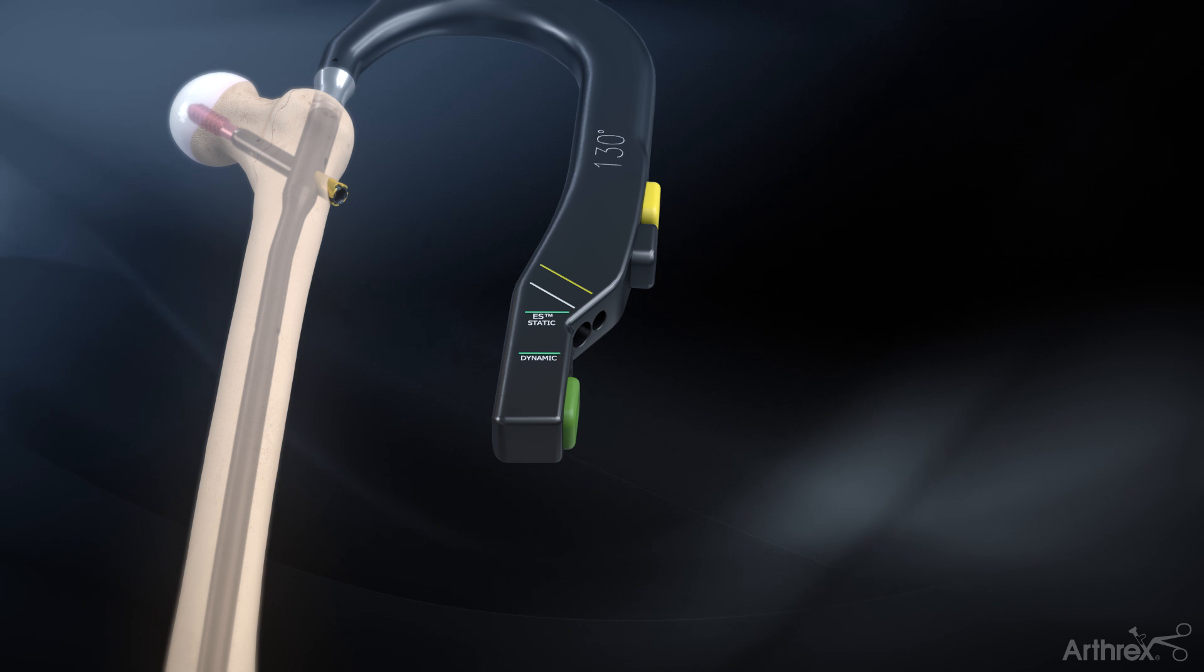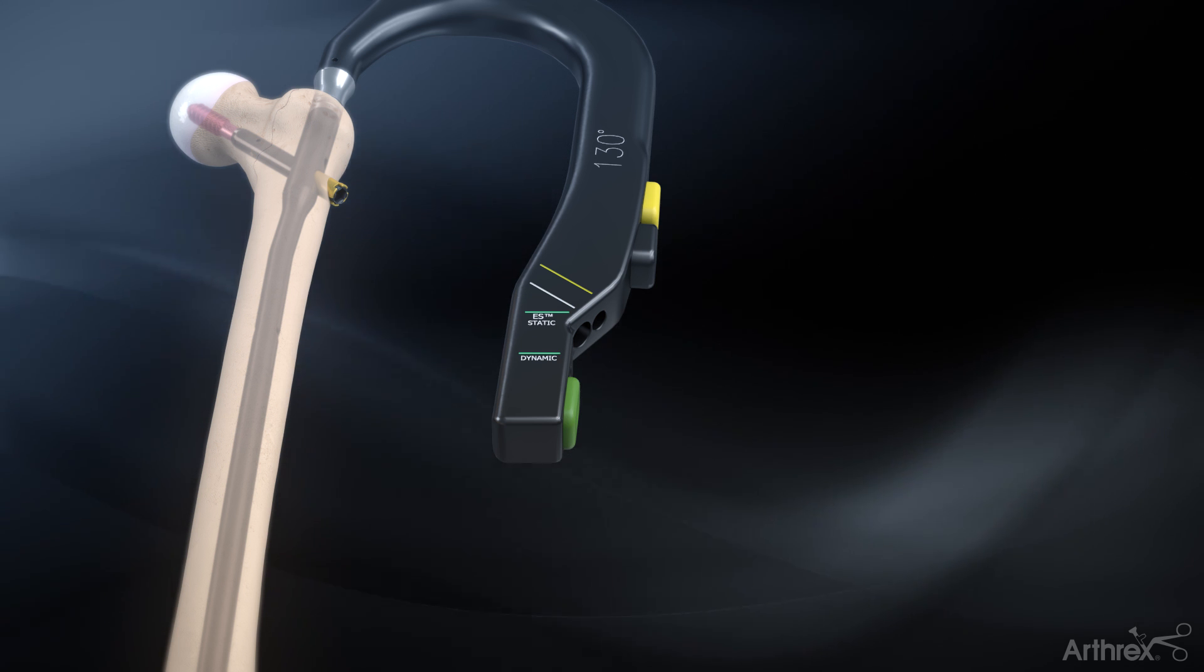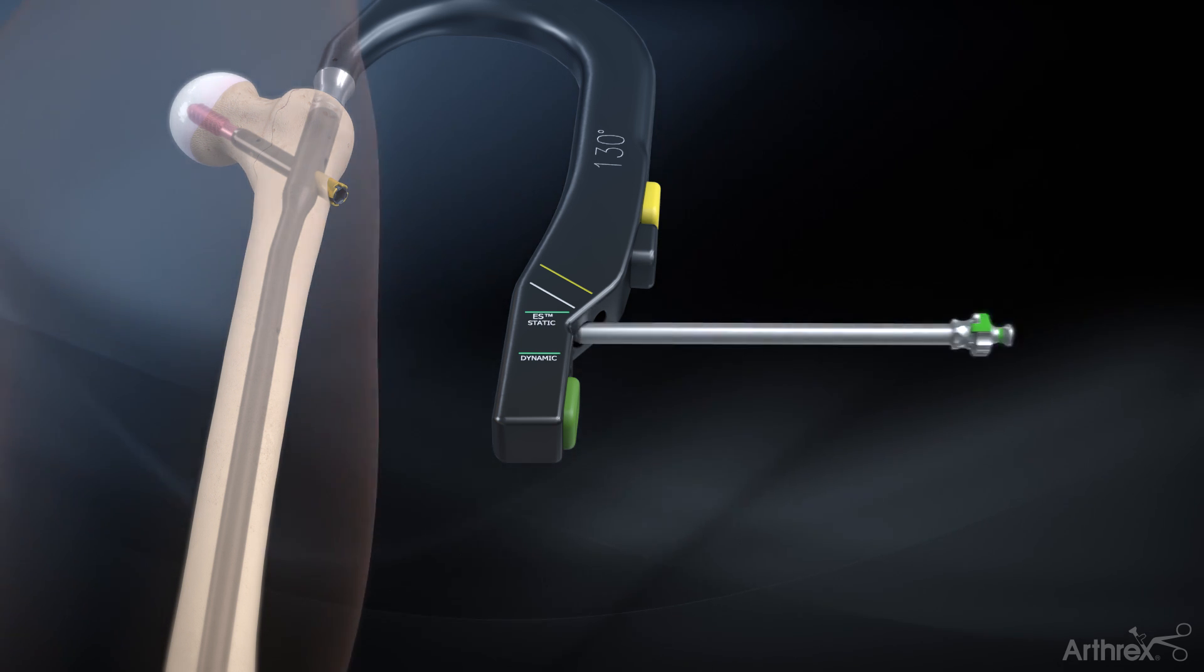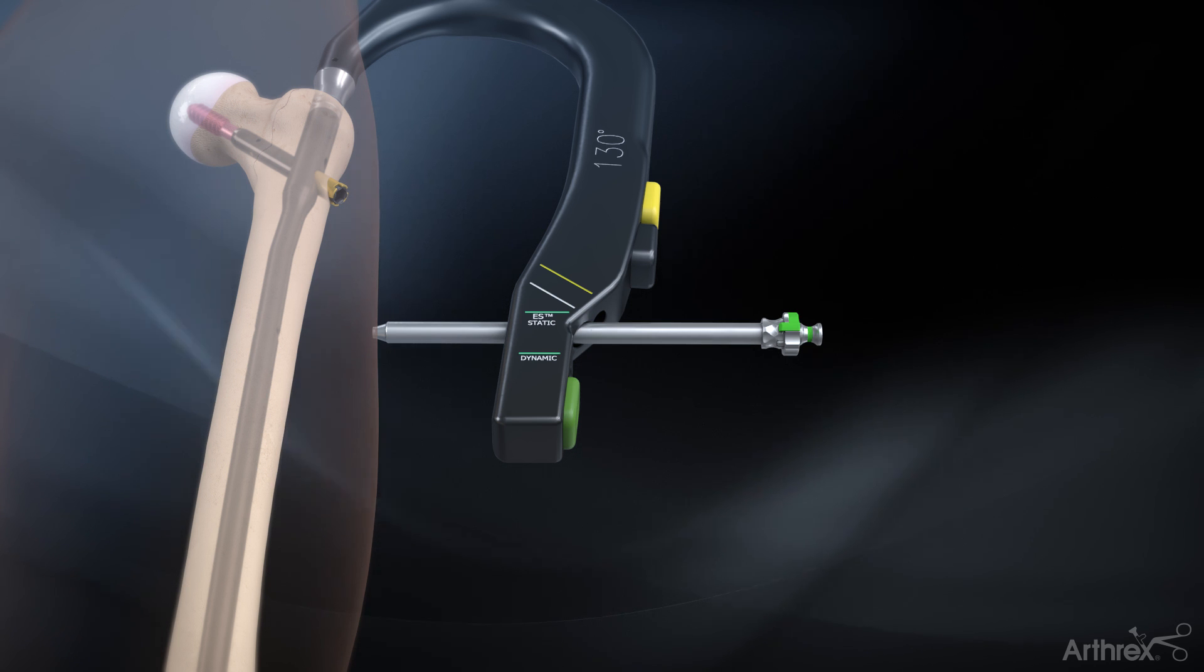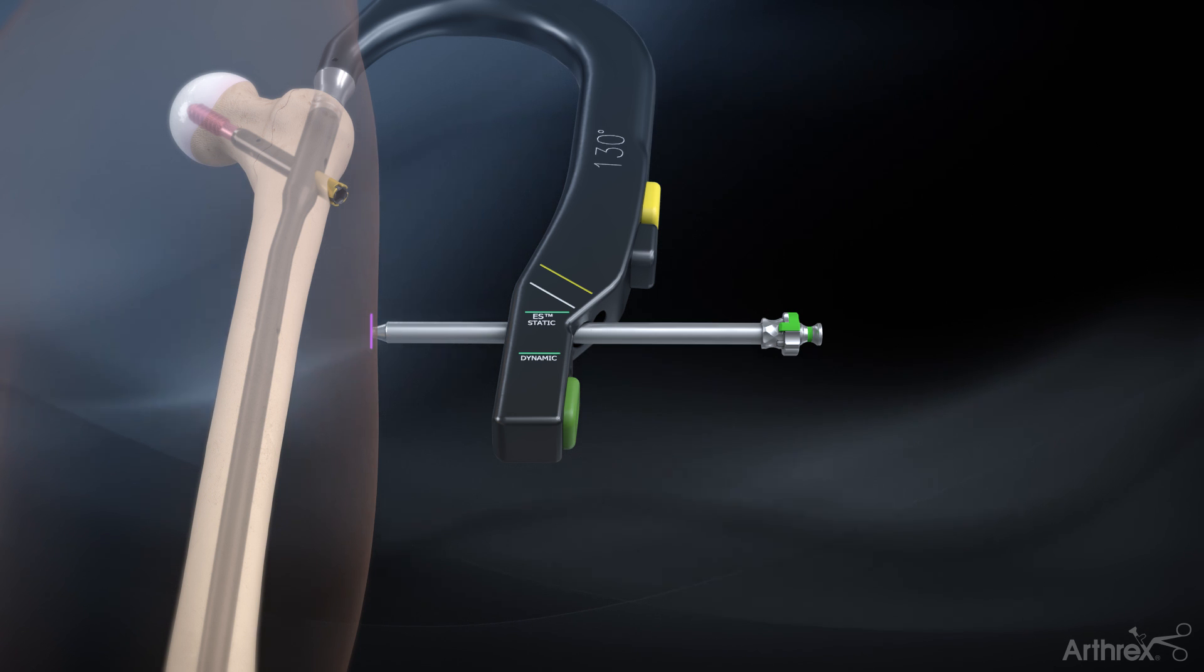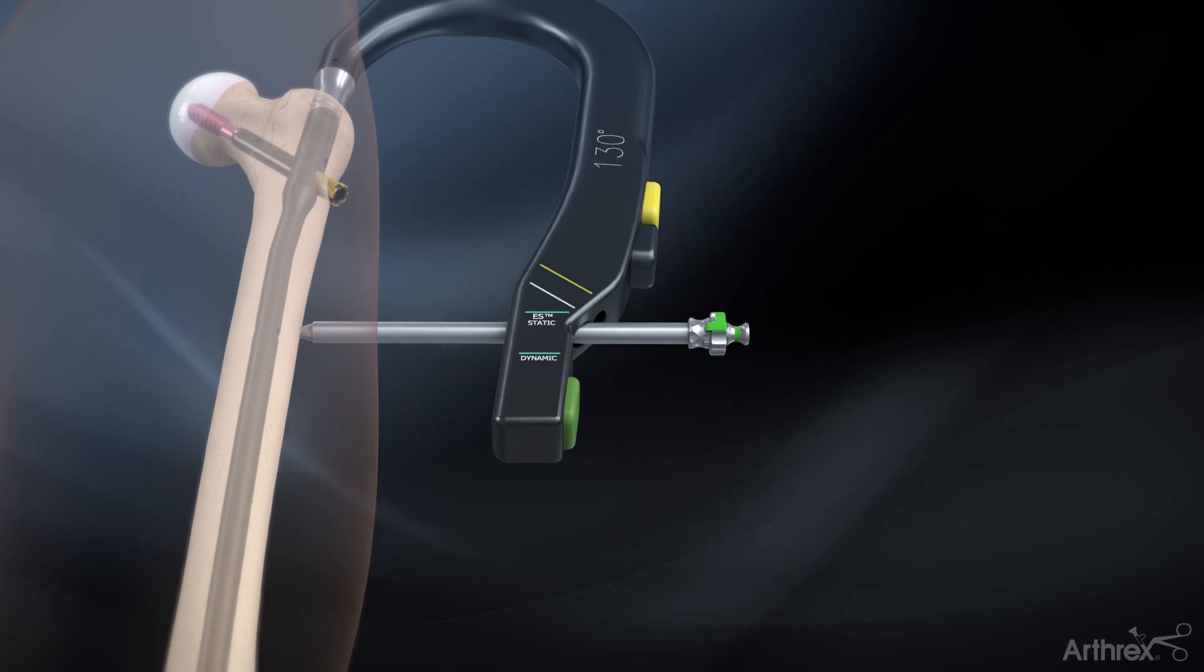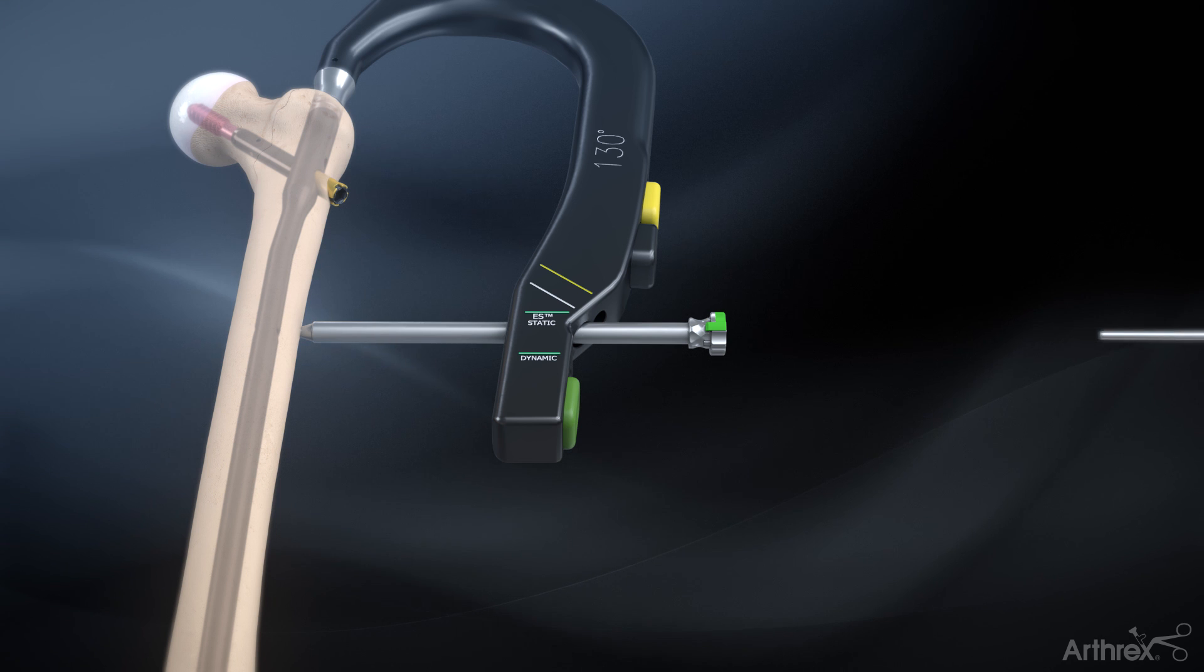For the ES trochanteric nail and short trochanteric nail, distal locking is performed through the targeting module. Place the distal screw triple sleeve assembly through the appropriate distal hole in the targeting module and mark the skin. Make the incision and advance the distal screw triple sleeve assembly to the lateral cortex of the bone. Remove the distal drill guide obturator.